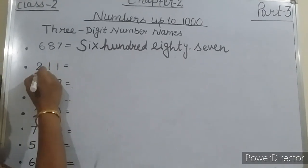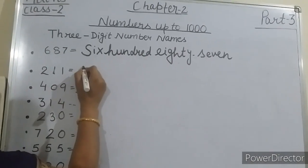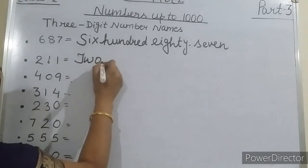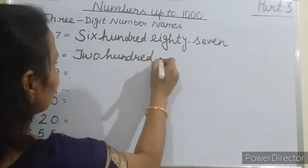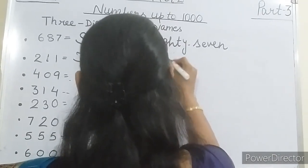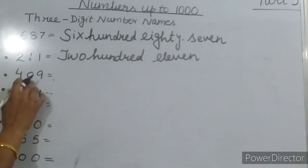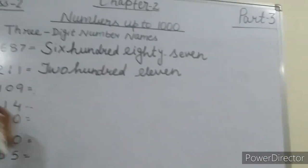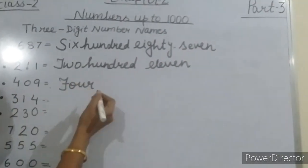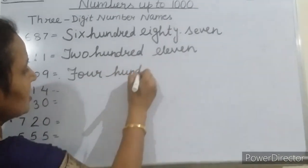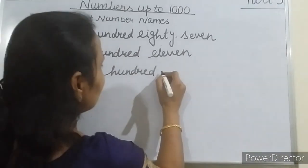Again, 211 — so how will you write? 211. Here, 409 — so how will you write 409? Four hundred — F, O, U, R, hundred — H, U, N, D, R, E, D. And here 9. Four hundred nine — 409.